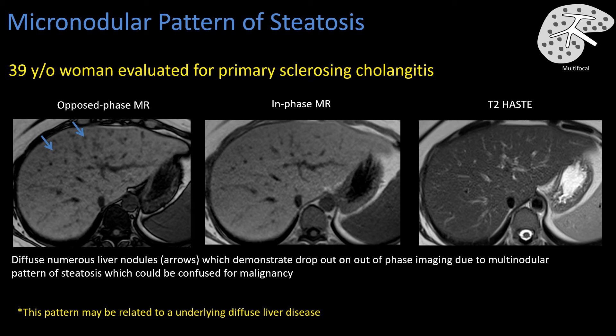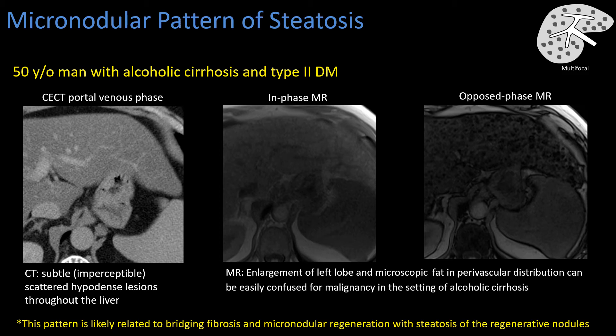This is another example of micronodular steatosis in a person with alcoholic cirrhosis. The CT was actually relatively normal with nearly imperceptible hypodense lesions. On MRI we can see some underlying heterogeneity on in-phase, and then on opposed phase we can see marked signal loss in a punctate or miliary pattern — multifocal micronodular steatosis.